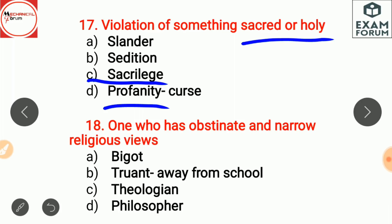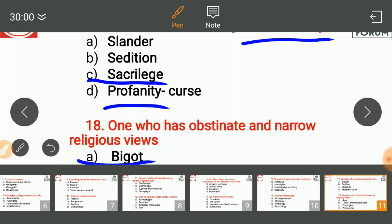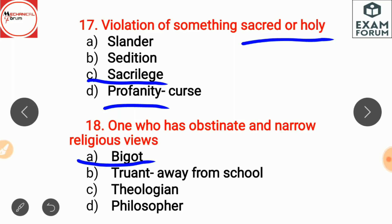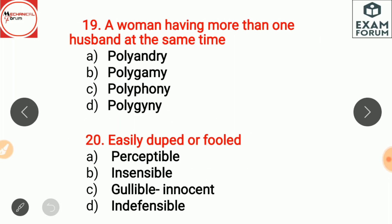One who has obstinate and narrow religious views is a bigot. A truant is a child who is away from school without permission. A theologian is a person who is expert in the study of God, religion, or faith. A philosopher is a person having a set of ideas and beliefs relating to the meaning of life.